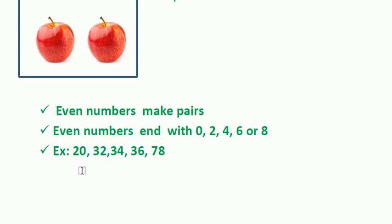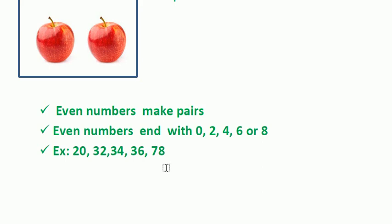Examples: the number 20 ends with 0, so 20 is an even number. Next, 32 ends with 2, so 32 is an even number. Next, 34 ends with 4, so 34 is an even number. Next, 36 ends with 6, so 36 is an even number. Next, 78 ends with 8, so 78 is an even number.